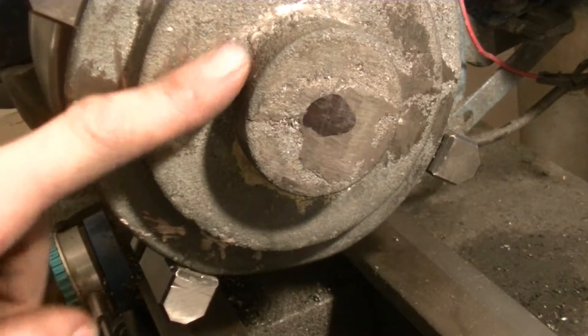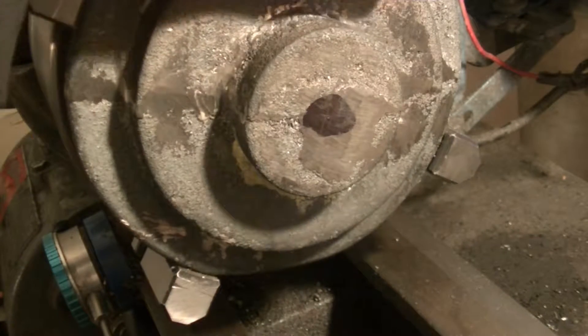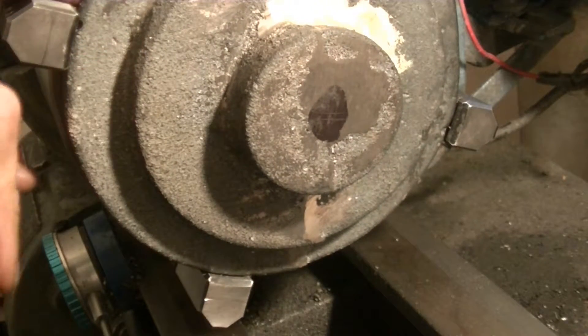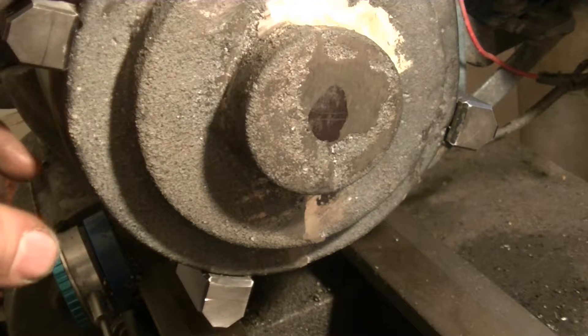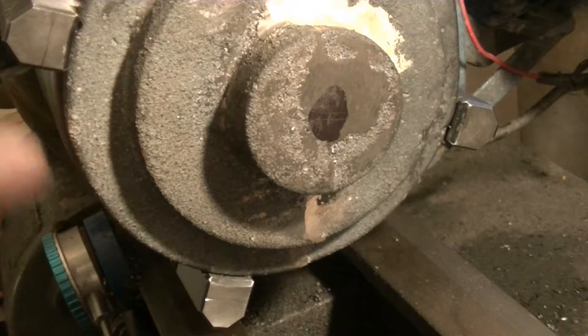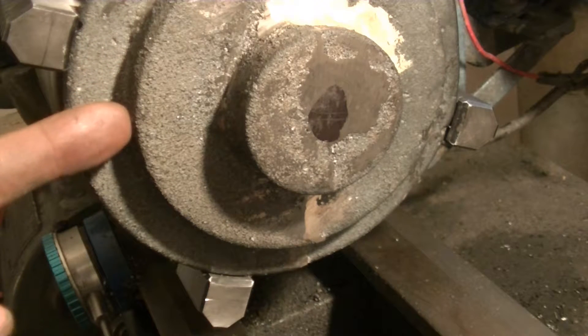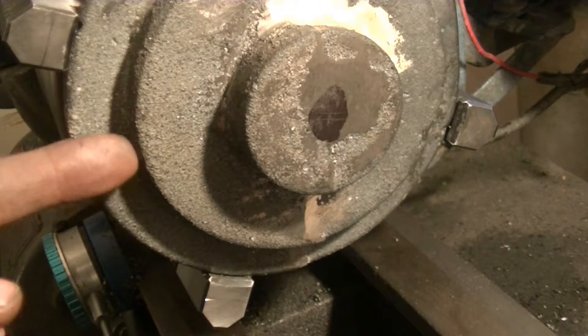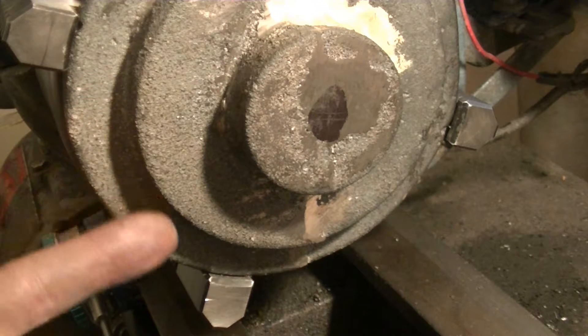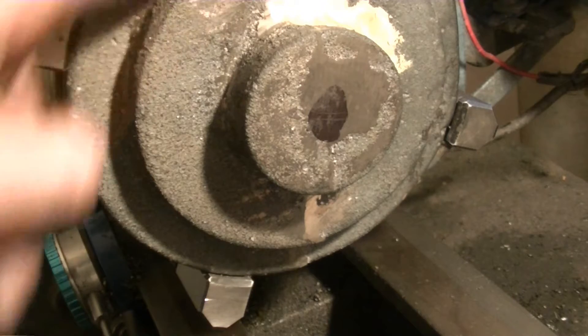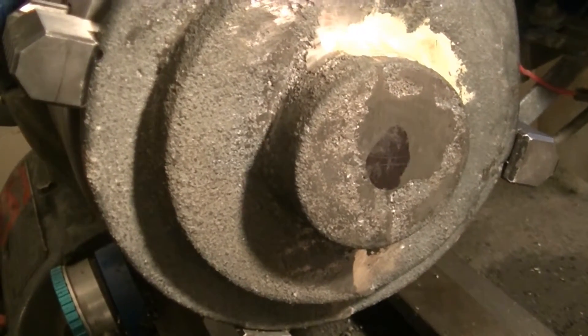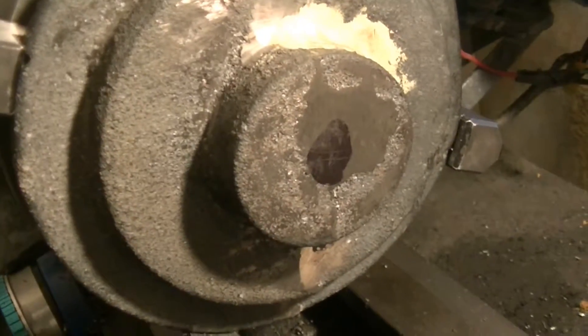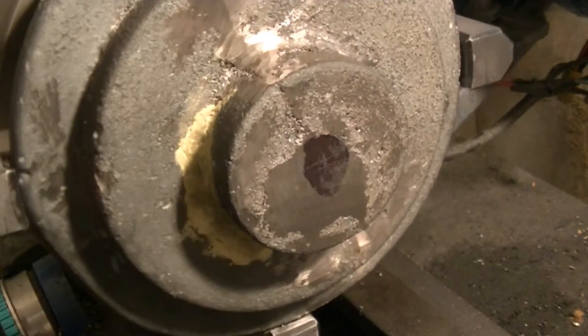So in the last video we casted this part. I got it chucked up in the lathe. I indicated it in as best as I could. It's kind of hard to go off these rough castings. I put the indicator on this and I just waited until it would fluctuate the least amount because this surface is pretty rough. So it was fluctuating like plus or minus 15 or 20 thou and that's as best as I'm going to get with a rough casting.